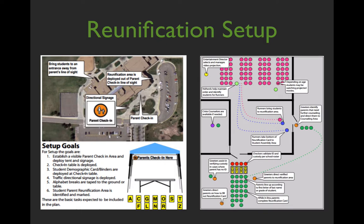Some challenges and learning points from exercises: make sure portable radios work at your family reunification site, ensure good cell phone connectivity, and make sure staff have incident command vests or other identifiers so parents know who to look for. Use appropriate signage, easels, or dry-erase boards to help the flow of the reunification site. Also, coordinate with local first response organizations — don't assume law enforcement will handle traffic control, as they may be occupied with the incident itself.